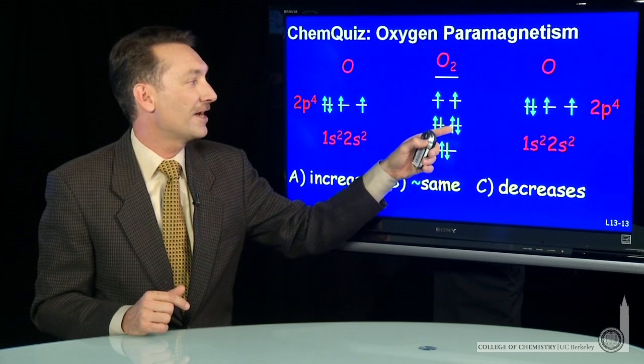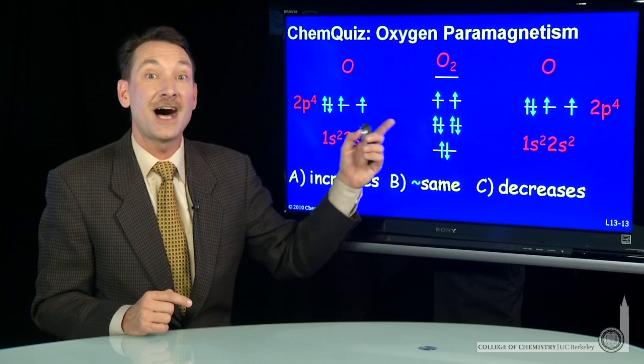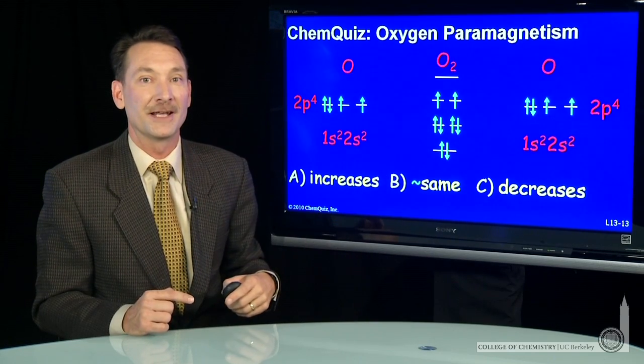So I'll take these 8 p electrons and make 8 molecular orbital electrons, 1, 2, 3, 4, 5, 6, 7, 8. And I find oxygen, the molecule, is also paramagnetic.